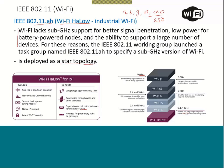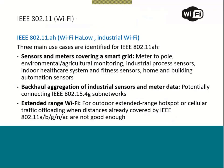Wi-Fi HaLow offers low power connectivity and penetration through walls — a good fit for the IoT domain. Three main use cases are identified for IEEE 802.11ah. The first is sensors and meters covering a smart grid: environmental monitoring, industrial process sensors, indoor healthcare systems, fitness sensors, and home and building automation sensors.